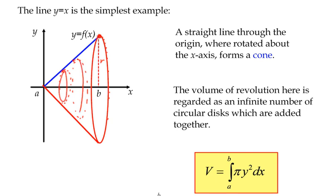So what we can see is that the volume of revolution here is regarded as an infinite number of circular disks. So as I said, at each point, we can imagine a circular disk of a particular radius, and the radius at any point is simply the value of the function, the y-coordinate of, in this case, the line y equals x.